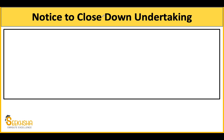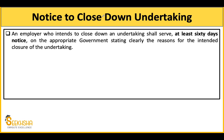Notice to close down an undertaking: if any employer wants to close his company, he must first give 60 days notice to the appropriate government — whether state or central government — and must write the reasons why. At least 60 days notice is required. This is a very important point. If a worker is retrenched under Section 70, how many days notice is given? 30 days. Similarly, for closure the notice is 60 days.